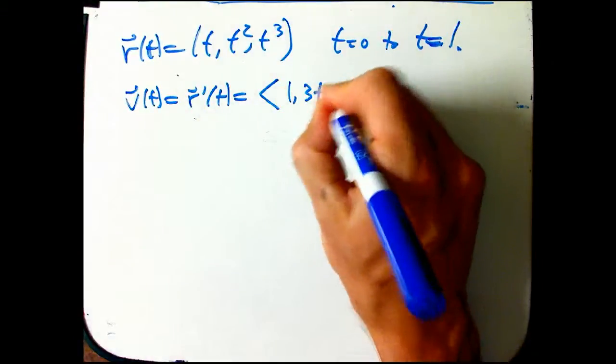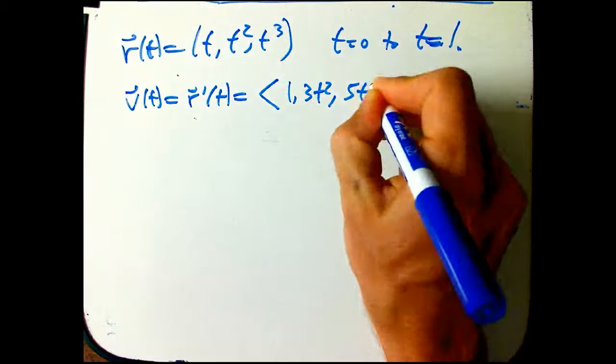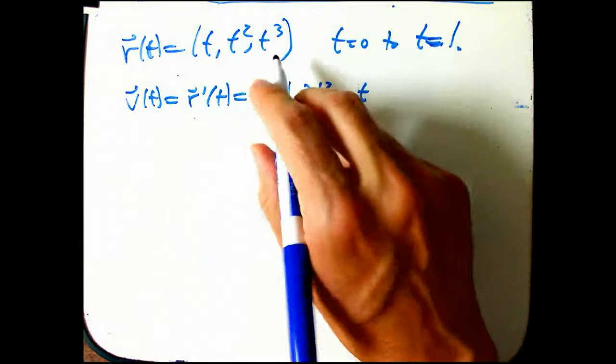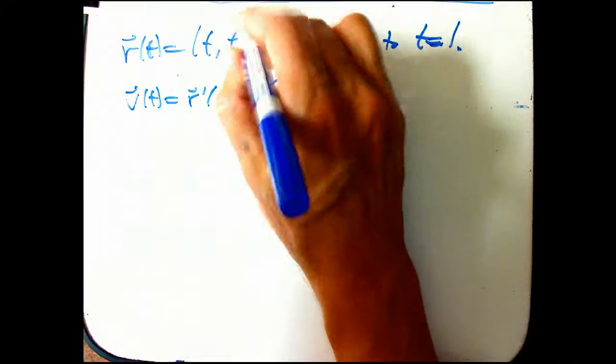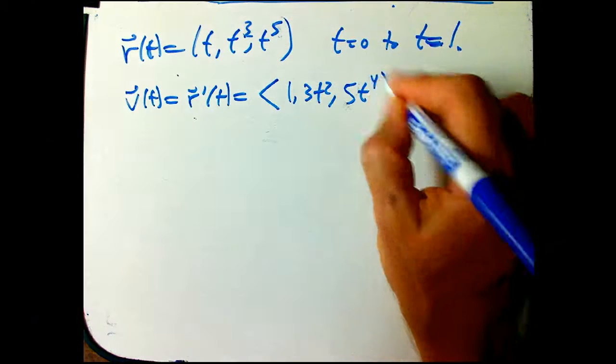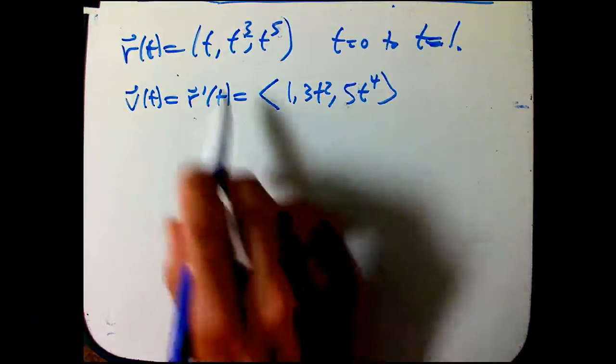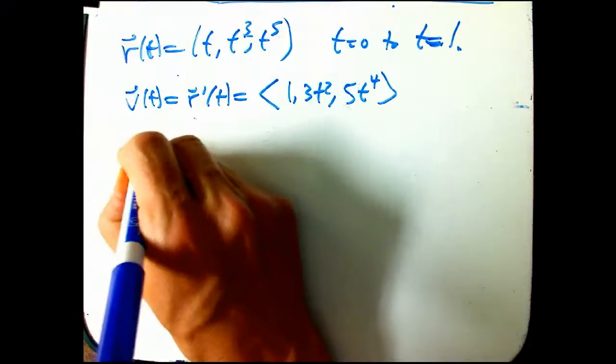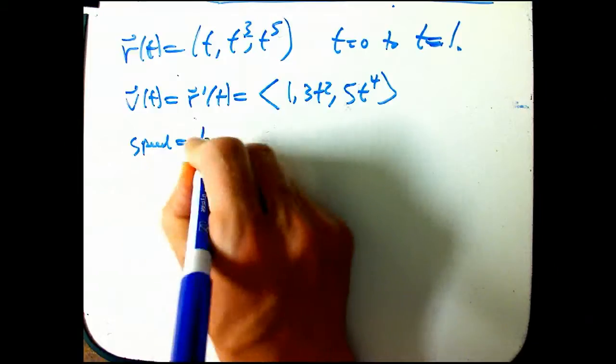The velocity is the derivative of the position. That's 1, 2t, 5t⁴. So this is just still not that complicated. And so the speed is the magnitude of that vector. Square root of, and now it's suddenly, well, it doesn't get that bad right now. 1 + 4t² + 25t⁸.